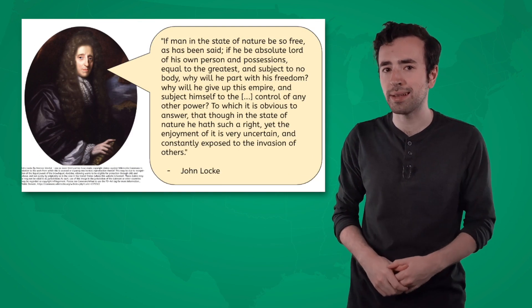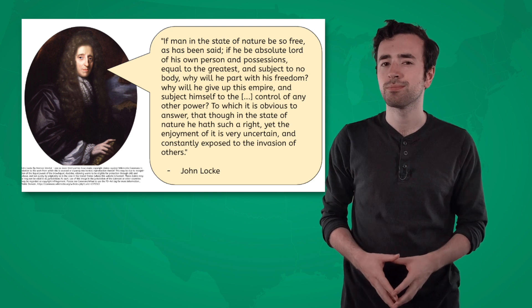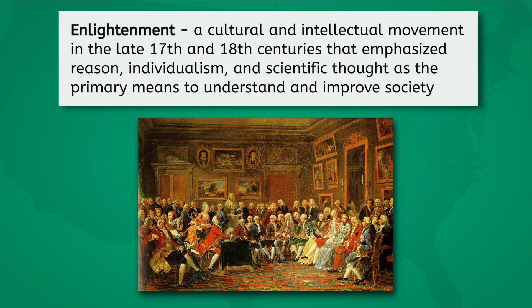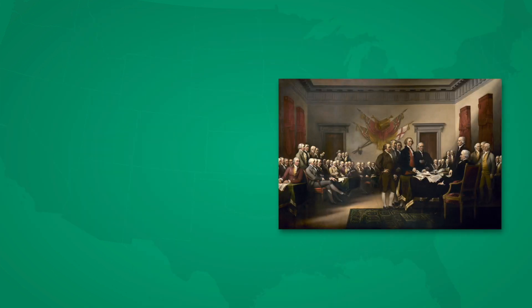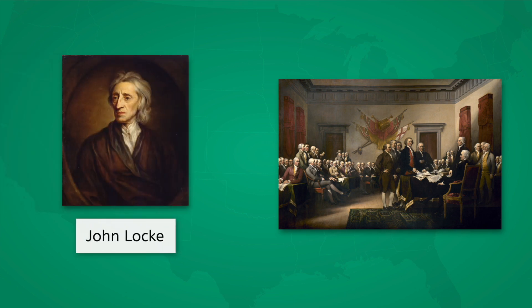When you heard 'social contracts' just now, did it seem a little bit familiar? It might be because we actually touched on it for a brief moment in the PDF for our declaring independence lesson in Unit 2. Do you remember what philosophical movement it came from? Yeah, the Enlightenment. The Enlightenment was a cultural and intellectual movement in the late 17th and 18th centuries that emphasized reason, individualism, and scientific thought as the primary means to understand and improve society. The American founders were influenced by many of the Enlightenment's most prominent philosophers, particularly by John Locke and his idea of natural rights and the idea of a social contract.